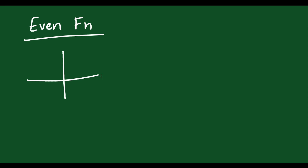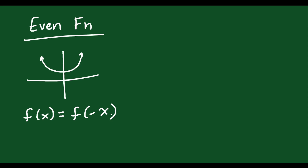An even function — an example might look something like this. It's an even function because f of x equals f of negative x. What that means is: if you took a positive x value or a negative x value and plugged them into your function, they would equal each other. You'd get the same height, the same y value. Therefore, the function values are equal at those points — it's symmetric over the y-axis.